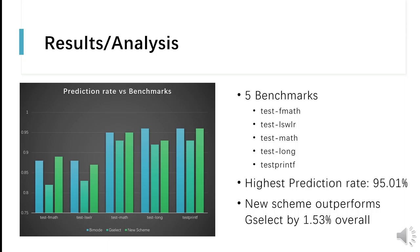To evaluate the prediction rate of the new branch predictor, I established a simulator platform based on Gem5. This paper uses the Gem5 simulator with G-select, B-mode, and the new branch prediction scheme as experiment objects. The benchmark programs used include test_fmath, test_ls_wlr, test_math, test_long, and test_printf.